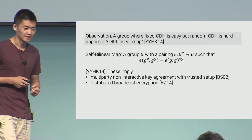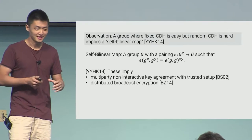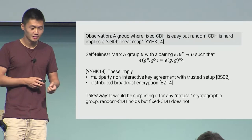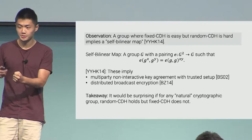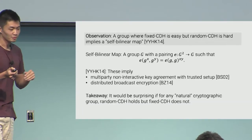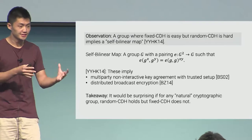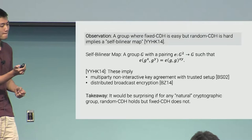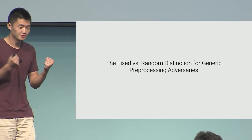How do we interpret this result? Rather than saying we should look for self-bilinear maps by looking for a group where CDH is split, the more plausible interpretation is that on any group where we're comfortable making a CDH assumption, it would be really surprising if there were actually a split — it seems quite unlikely that fixed CDH will be easy but random CDH hard on any group where we're comfortable assuming CDH. I should also mention that we have analogous results for the DDH setting, where we show that if a group has fixed DDH being easy but random DDH being hard, this implies a simple black-box construction of identity-based encryption.